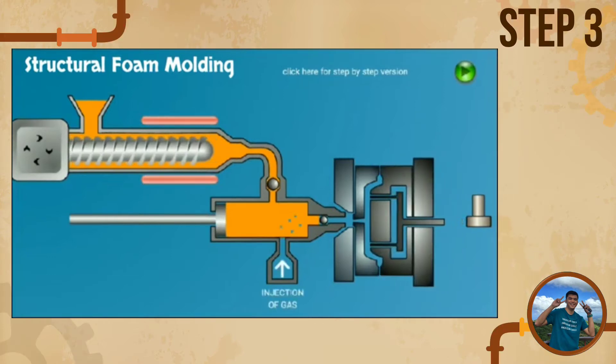In process 3, the gas is then injected into the melted plastic under a certain amount of pressure. The top ball valve prevents feedback into the injection unit. The front ball valve prevents weeping of the material through the nozzle.